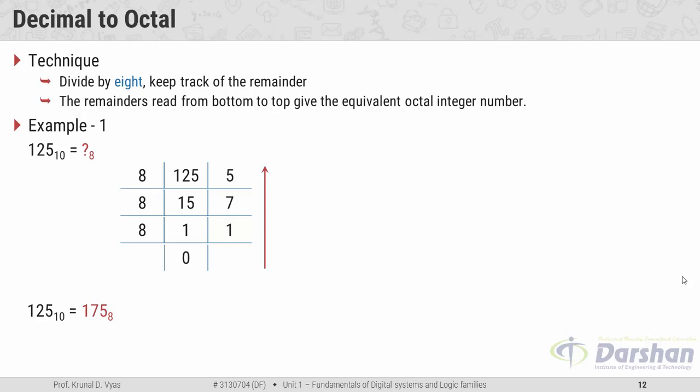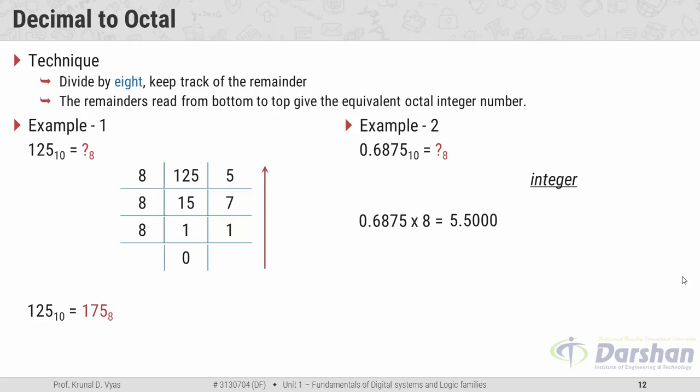The second example covers the fractional portion: 0.6875 in decimal equals what in octal? In the successive multiplication by 8 method, the given decimal fraction and subsequent fractions are successively multiplied by 8 until the fraction part of the product is 0, or until the desired accuracy is obtained. Multiplying 0.6875 by 8 gives 5.5.